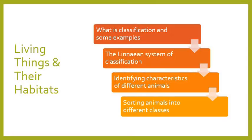So what we're looking at today are living things and their habitats. We're going to first think about what classification is and some examples. We're going to look at the Linnaean system of classification, identify the characteristics of different animals, and sort those animals into different classes.